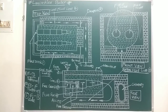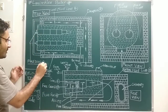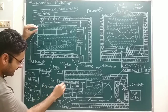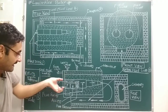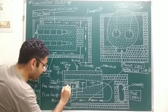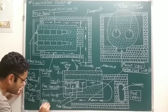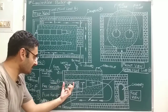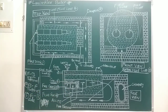Now for the working principle: first, we open the fire door and place coal on the fire grid inside the tube. The fire grid is a type of net on which combustion of coal takes place. After ignition, combustion starts and flue gases are produced inside the tube.